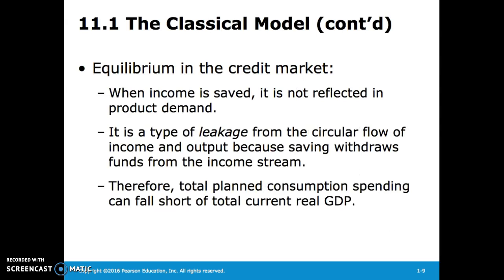When income is saved, it is not reflected in product demand, so we can see it as a type of leakage in the circular flow of income and output, because saving withdraws funds from the income stream. Total planned consumption spending can fall short of total current real GDP.